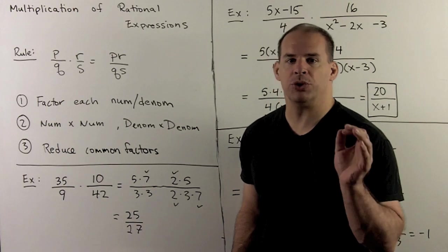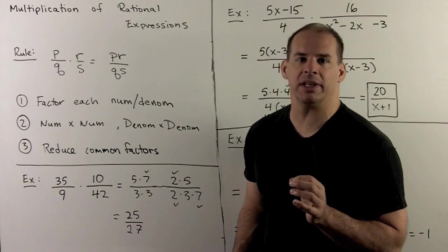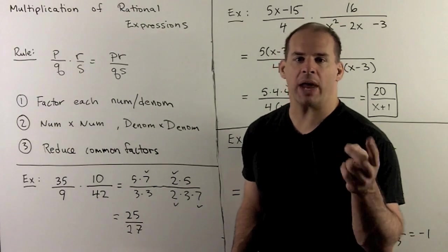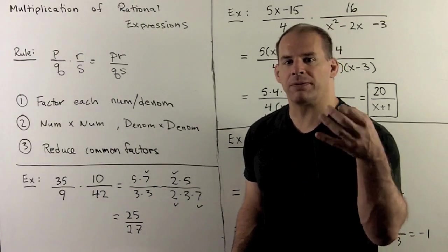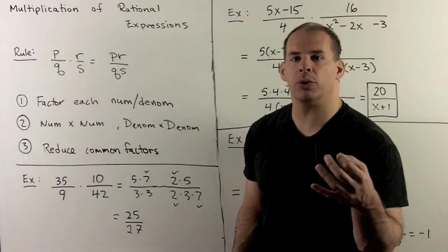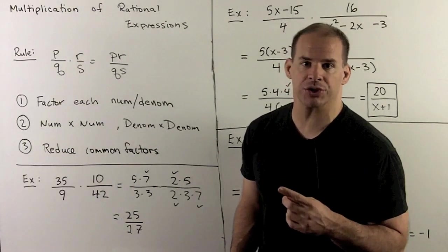For rational expressions, we do multiplication and division before we do addition and subtraction. With rational numbers, if I want to add or subtract, we have to put our fractions over a common denominator, and that takes a little bit of work. So we do multiplication and division first.